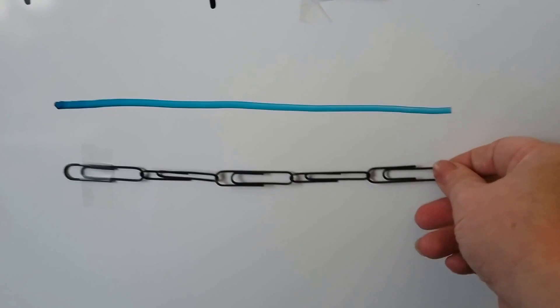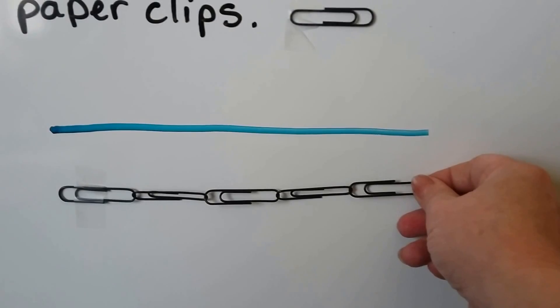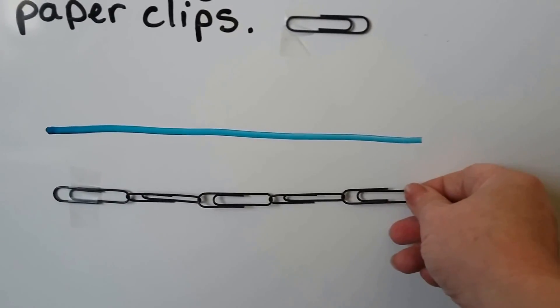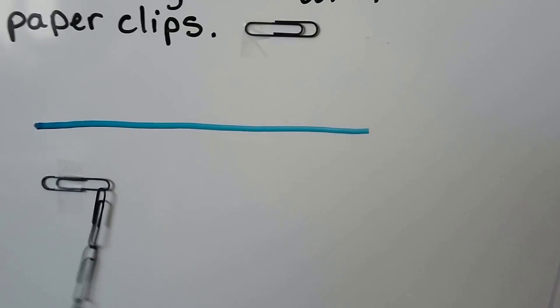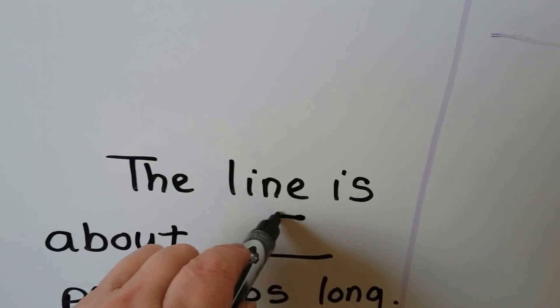We can count how many units this blue line is. It's one, two, three, four, five paper clips. It's five paper clips long. The line is about five paper clips long.